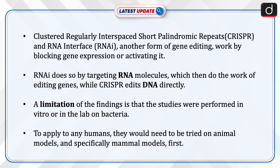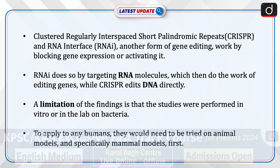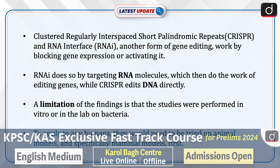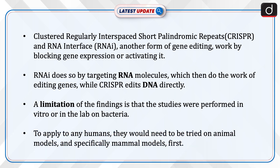Clustered regularly interspaced short palindromic repeats (CRISPR) and RNA interference (RNAi), another form of gene editing, work by blocking gene expression or activating it. RNAi does so by targeting RNA molecules, which then do the work of editing genes, while CRISPR edits DNA directly.